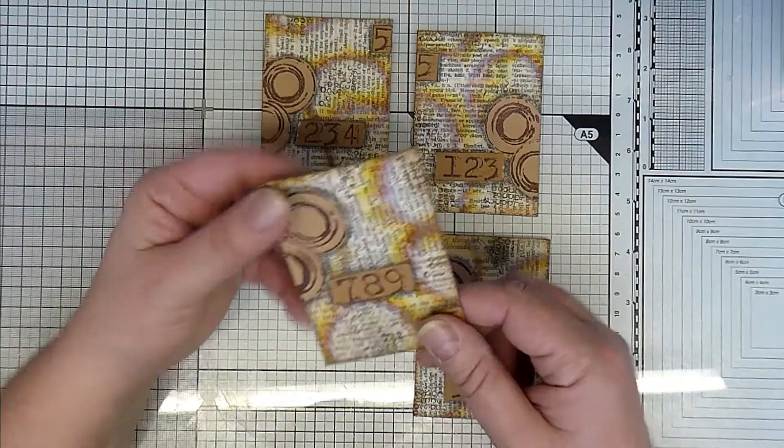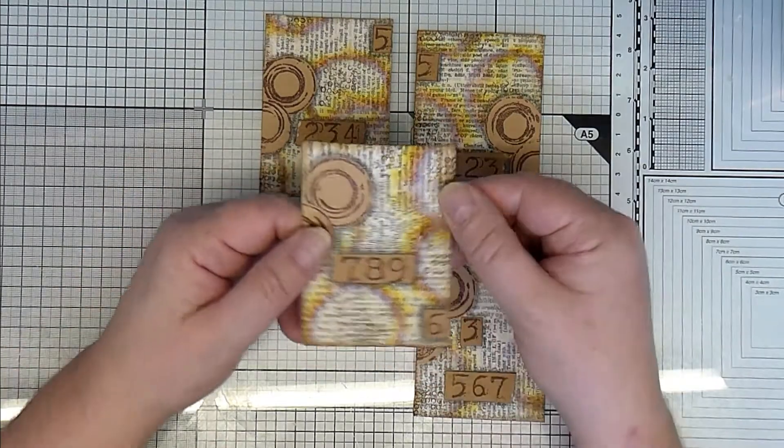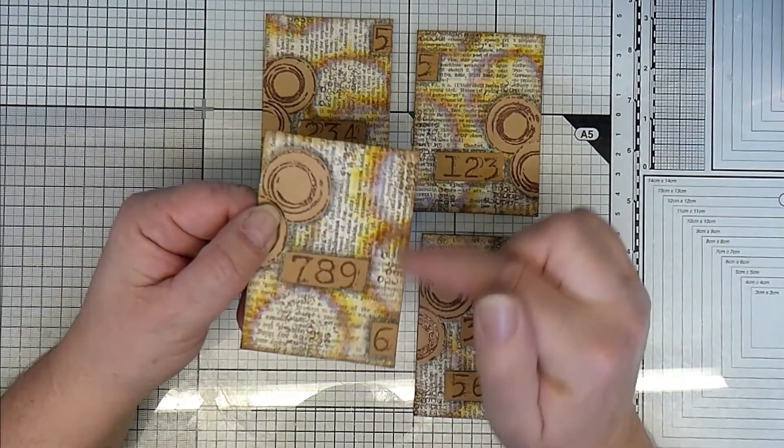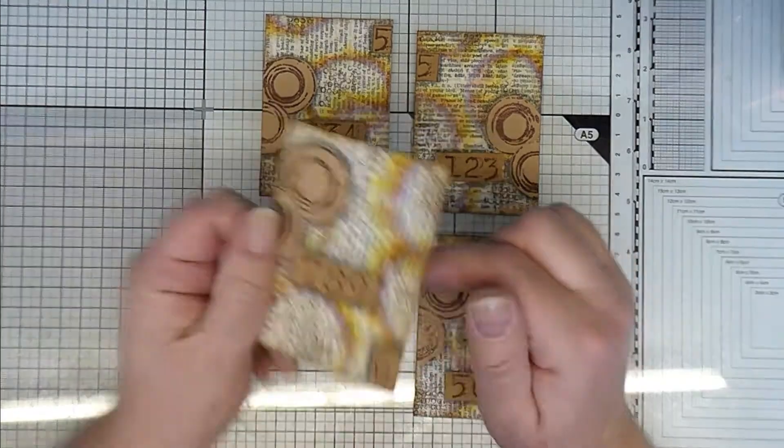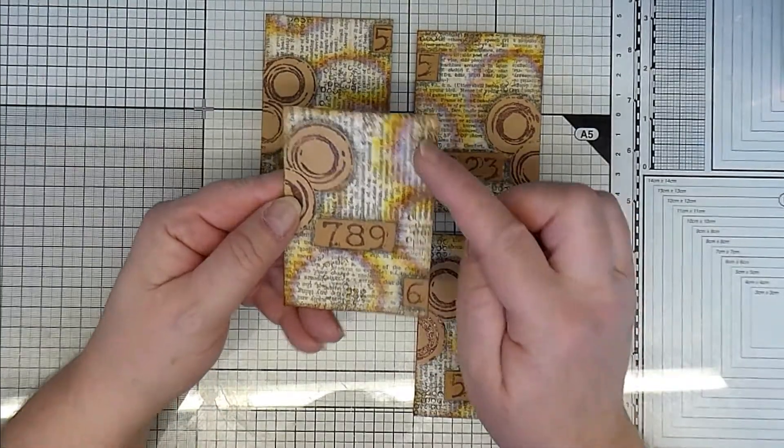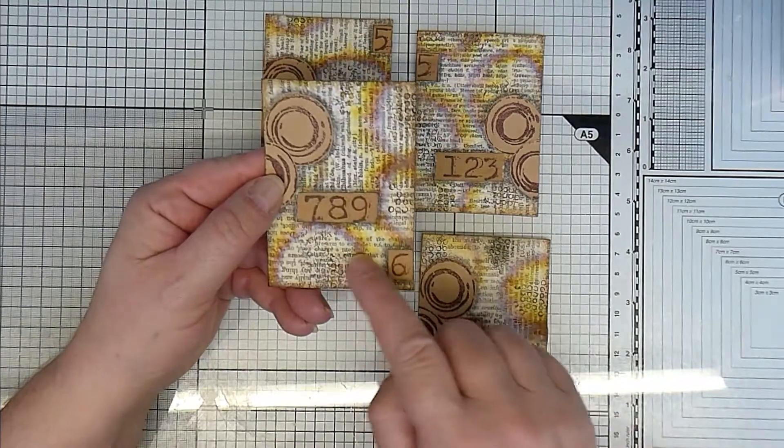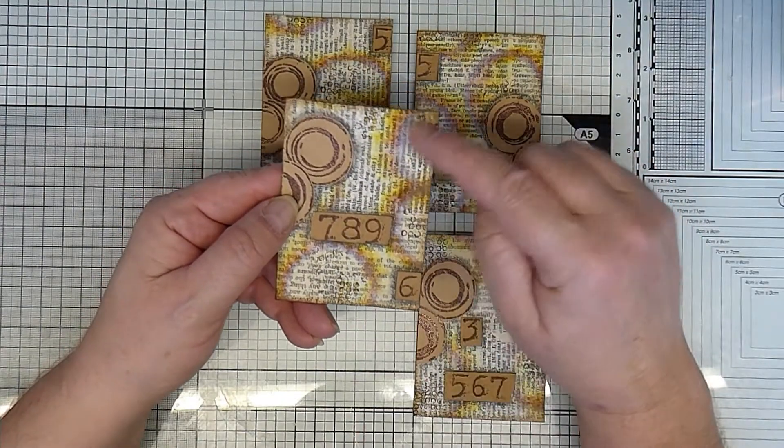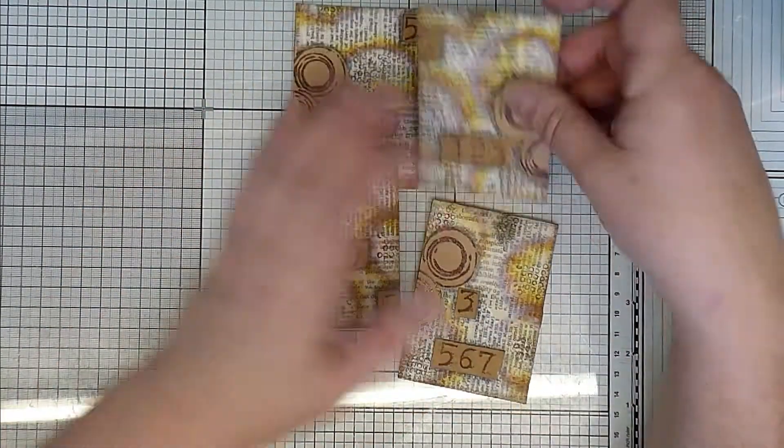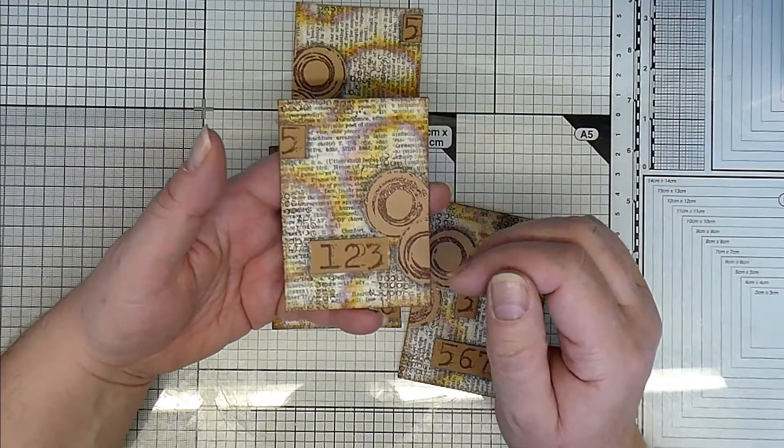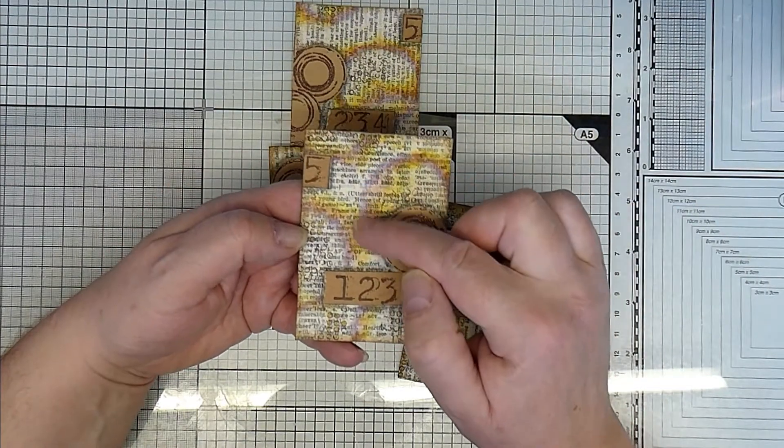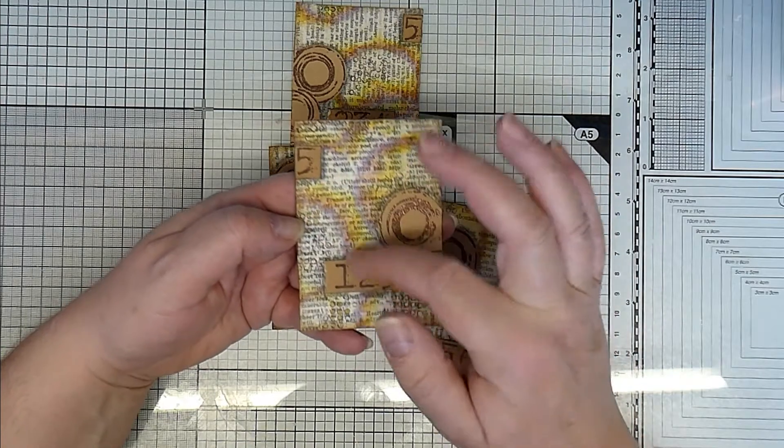So I've finished the ATCs. I'd covered the backs just with book pages. Once that was dry, I just glued on the tissue which I'd applied the distress inks to, spritzed with water, and then dried. And you can see it's created a halo effect with different colors.